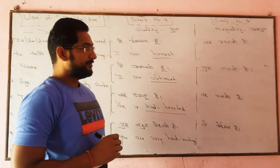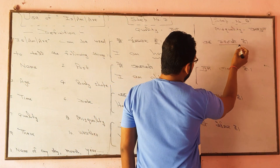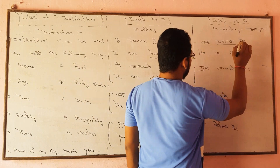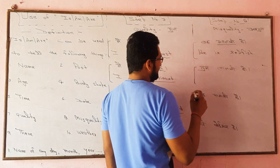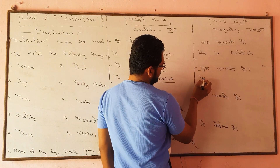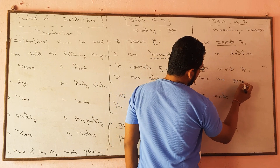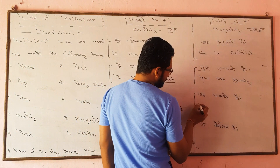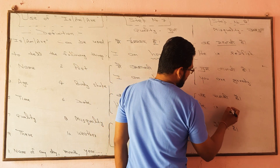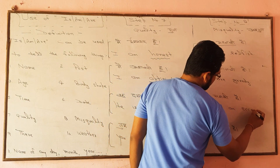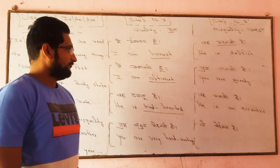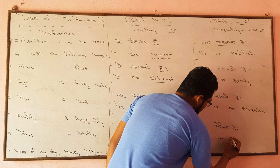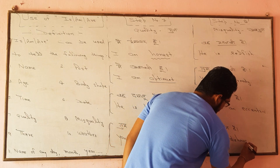Step number eight: miss-qualities. We have 'swarthi', so use 'he is selfish'. You are greedy. He is eccentric. They are dishonest.